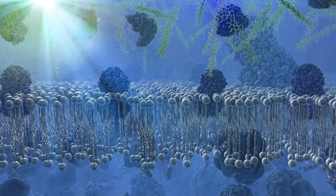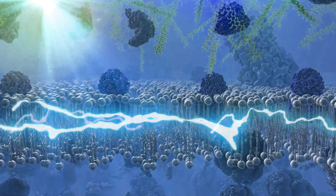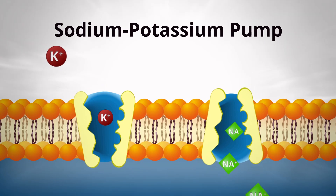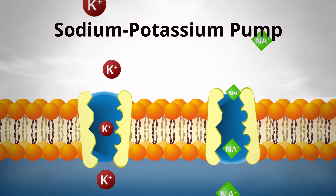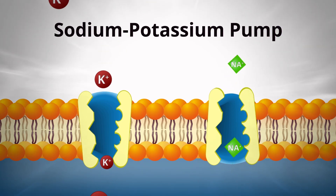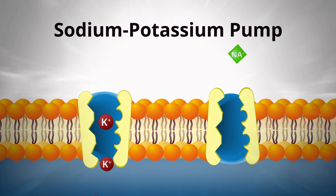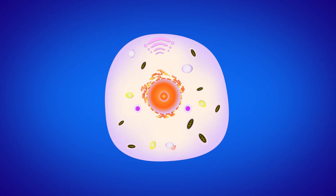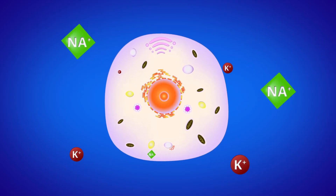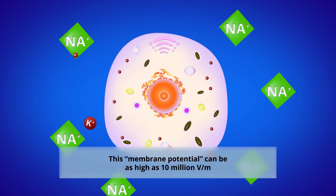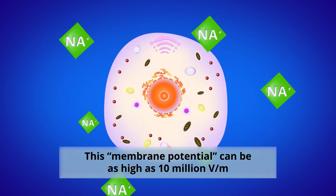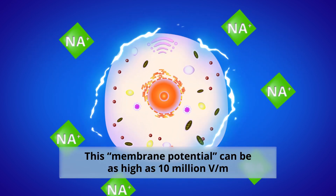The cell membrane is also like the battery of the cell. Using a process called the sodium-potassium pump, an enzyme in the cell membrane transports sodium out of the cell while bringing potassium into the cell. This active transfer of electromagnetically charged ions creates a resting voltage across the cell membrane.